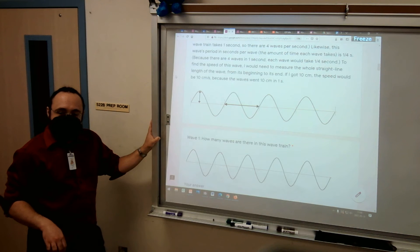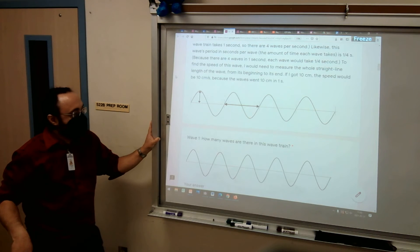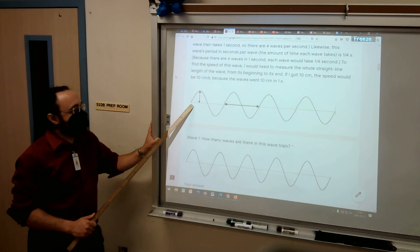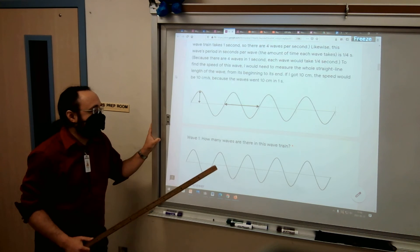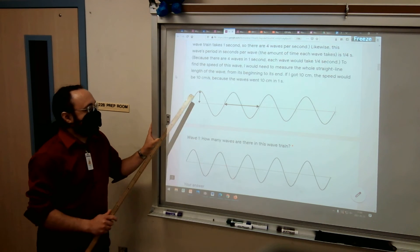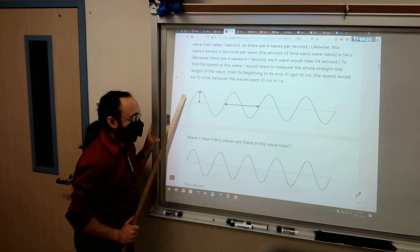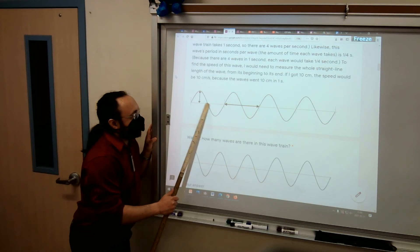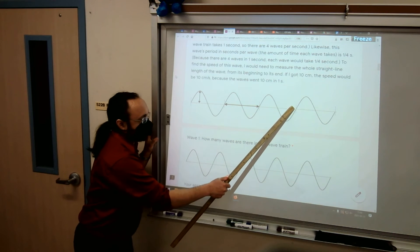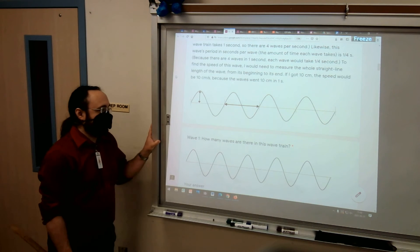Likewise, period is the opposite of frequency. Frequency is waves per second. Period is seconds per wave. So it's like what period of time does each wave take? So if this is one second and there's four waves, then each wave takes a fourth of a second: one-fourth, two-fourths, three-fourths, four-fourths, all the way to one second.